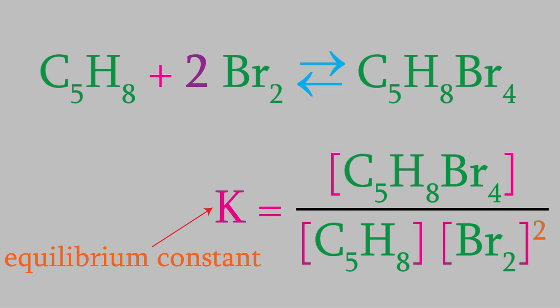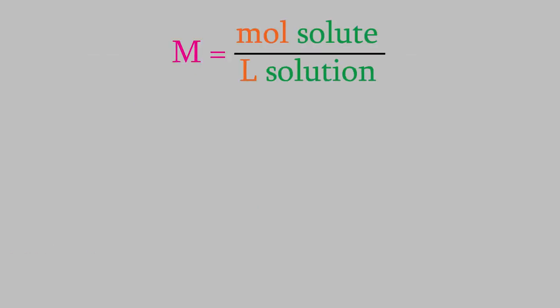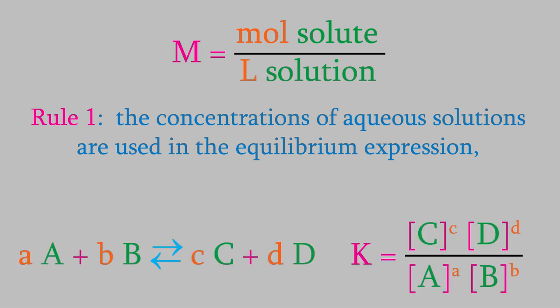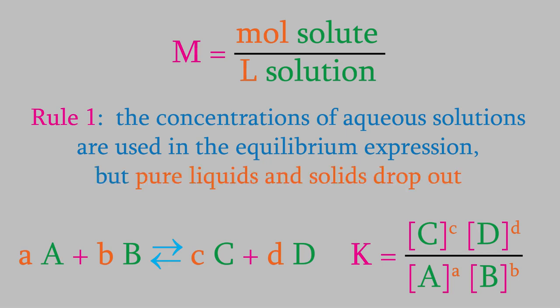Every reversible reaction has its own value for the equilibrium constant. As we'll see in the next few videos, the equilibrium constant is a very useful property of a reaction. It turns out that there are only a couple of rules to know about it. First, remember that in order to have a molarity, we need to have a solute and a solvent. So if we have an aqueous solution, we write its concentration in the equation for K. But we can't have a molarity for a pure solid or a pure liquid, so solids and liquids don't get used in the equilibrium expression.